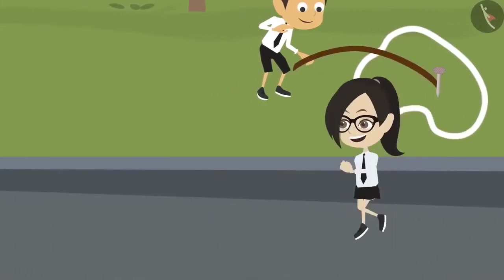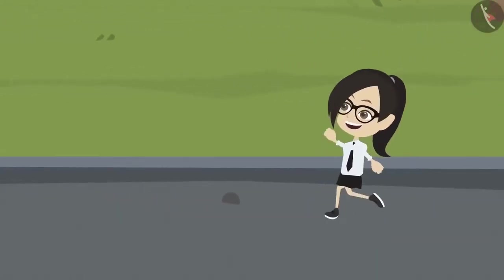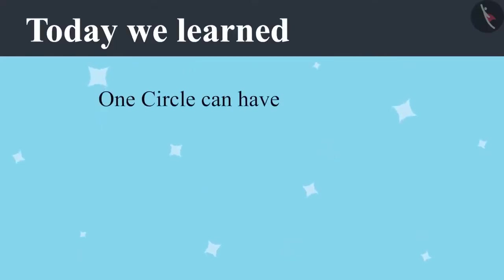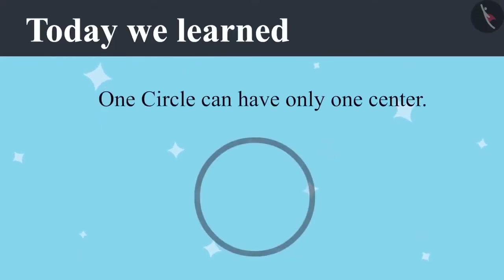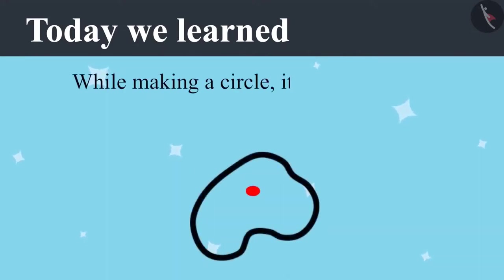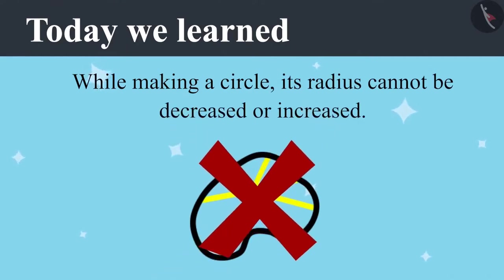Vandana is happy today because she helped Ayushman and Riyanj. She told Ayushman that a circle can have only one center, and told Riyanj that while making a circle its radius cannot be decreased or increased. If you pay attention in class you will not have to repeat your work like Riyanj and Ayushman.